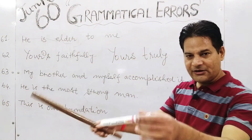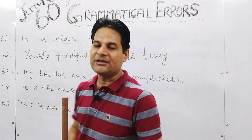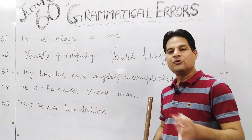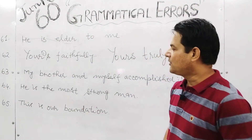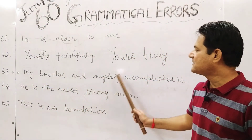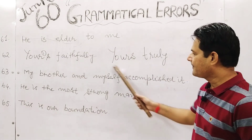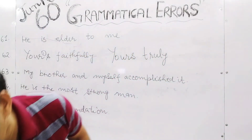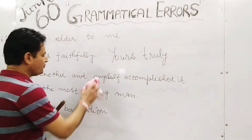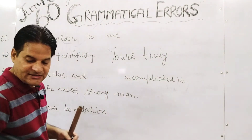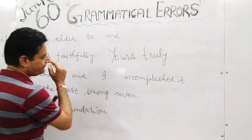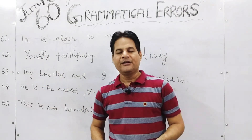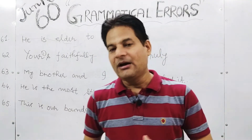Sentence 63: 'My brother and myself' — we feel really chuffed when we use reflexive pronouns, but please do not get into any illusion because this is wrong. 'Myself' cannot be used here as a subject. Remove the reflexive pronoun and use a direct subject instead. A sentence does not begin with a reflexive pronoun. Use: 'My brother and I accomplished it.' A good word — or better yet, 'achieved' or 'accomplished.'